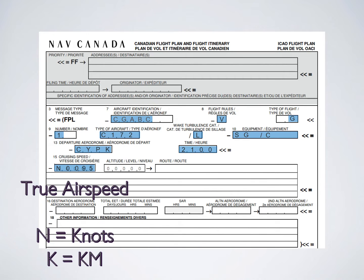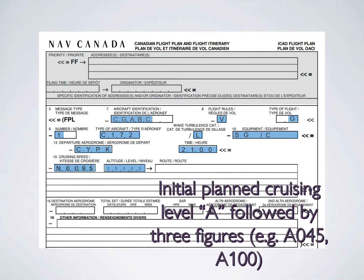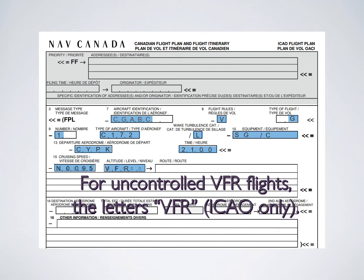For the altitude section, put your initial planned cruising altitude using A to denote feet, followed by three digits. Drop the last two zeros - so if your initial planned altitude is 4,500 feet, you write A045. If it's 3,500 feet, you write A035. Since this is an ICAO flight plan, for VFR flights you can also just put VFR in that box instead of the altitude. Either way should be fine with your examiner.